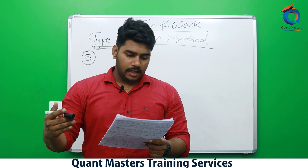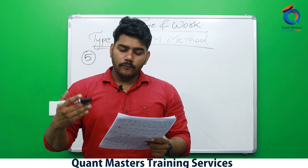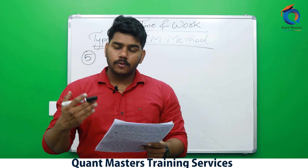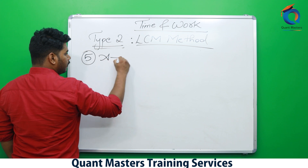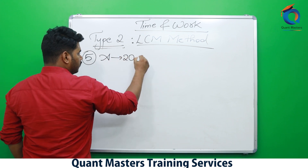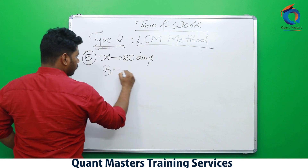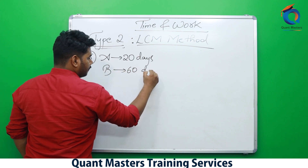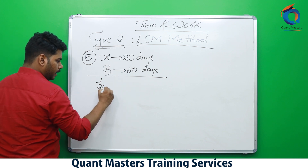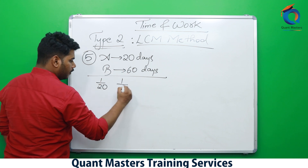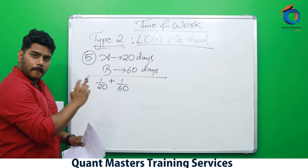A completes the work in 20 days and B completes the work in 60 days. If they work together, in how many days will they complete the work? A's one day work is 1/20. B's one day work is 1/60. Working together means we add them, so we put a plus sign.